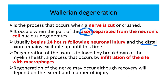The distal portion of the axon — the cut part — remains excitable up to 24 hours. Degeneration of the axon is followed by breaking down of the myelin sheath. This process involves infiltration by macrophages, which engulf and destroy the distal part of the axon that has been completely crushed or removed.